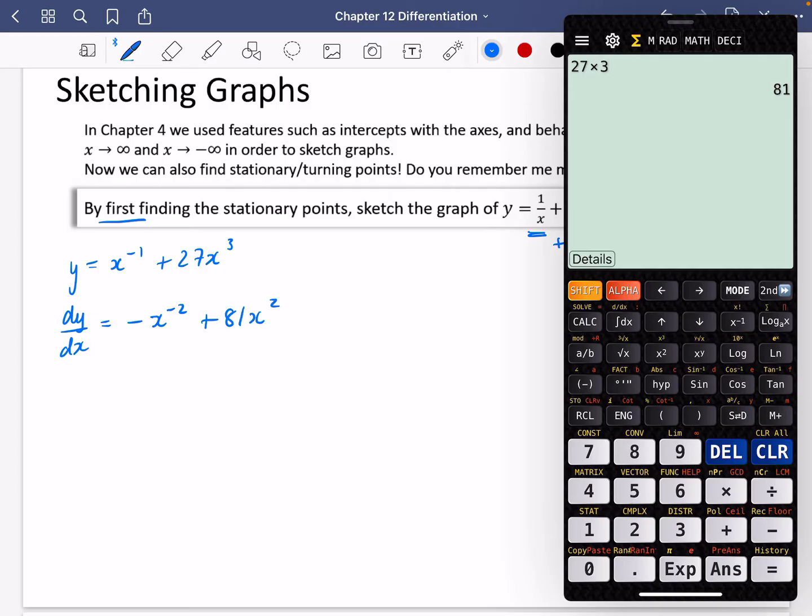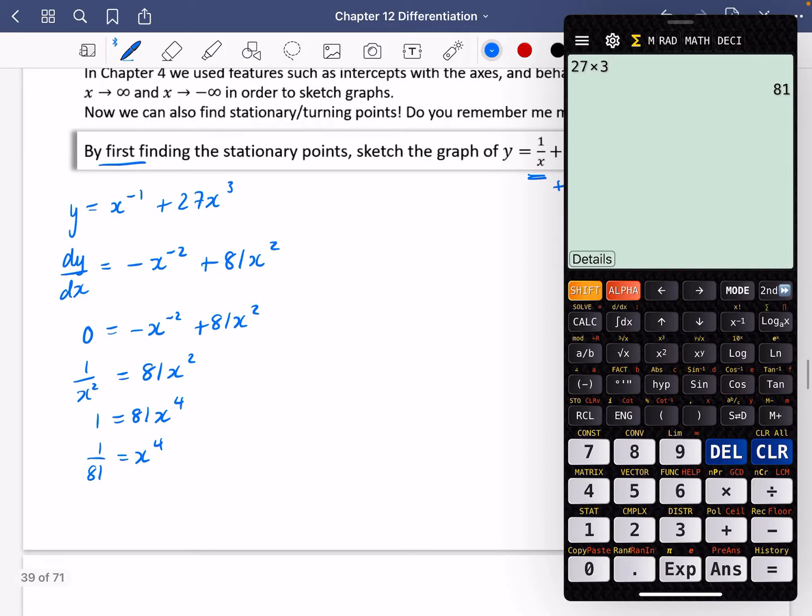So because it's stationary, I can make this equal zero. So that's -x⁻² plus 81x². Let's put this onto the other side. So I get 1/x² equals 81x². I'm going to multiply by the x² here, so I get x⁴. I'm going to divide by the 81. And then I'm going to do the fourth root of 1/81 to get x.